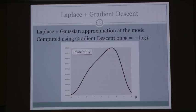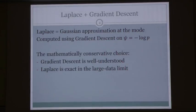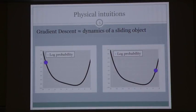Here is an example of a posterior distribution. The Laplace approximation consists in first finding the maximum, and then fitting a purely local Gaussian approximation at that maximum. This requires us to compute the maximum, which we do using gradient descent on minus log of p. This is a mathematically conservative choice: gradient descent is very well understood, and we have a theorem telling us that the Laplace approximation is exact given a sufficient amount of independently generated data. Gradient descent also speaks to physical intuitions, matching the dynamics of an object sliding down a slope.